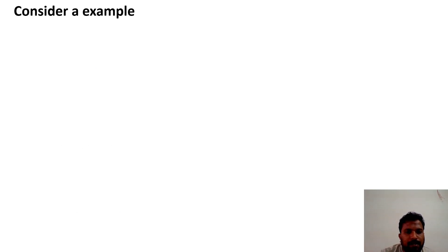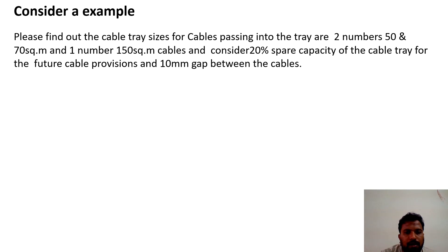Let's see an example. In this example, they give 2 number 50 square mm cables, 2 number 70 square mm cables, and 1 number 150 square mm cables, considering 20% spare capacity and 10mm gap between the cables. They will ask you to find out the cable tray size.